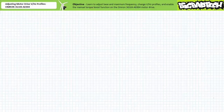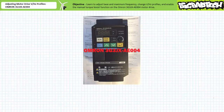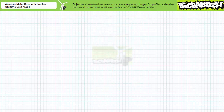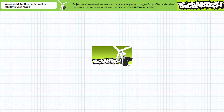Good day and welcome to Big Bad Tech. I'm your instructor Jim Pytel, and today we'll learn to adjust base frequency, maximum frequency, and change volts per hertz profile on the OMRON 3G3JX AE004 motor drive. This lecture is predicated on the assumption that viewers have watched the installing a remote speed potentiometer on the OMRON 3G3JX AE004 motor drive lecture available at the Big Bad Tech channel.